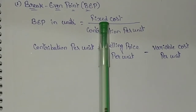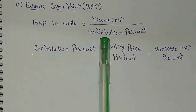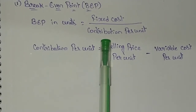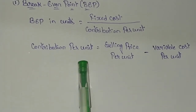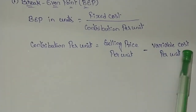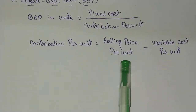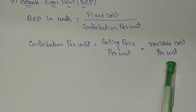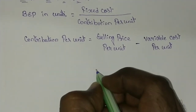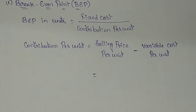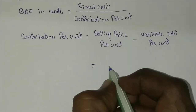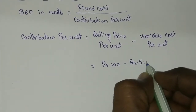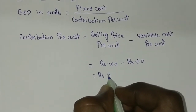In the problem, they have given directly the fixed cost, that is 1 lakh rupees. But they have not provided the contribution per unit, so we have to calculate it. The formula for contribution per unit is selling price per unit minus variable cost per unit. Both values are provided in the problem, so the contribution per unit is rupees 50.